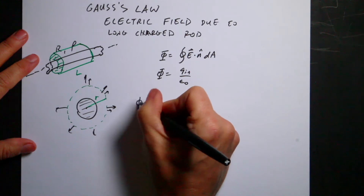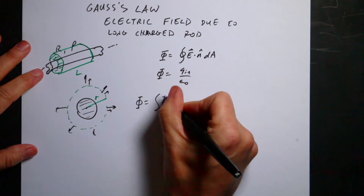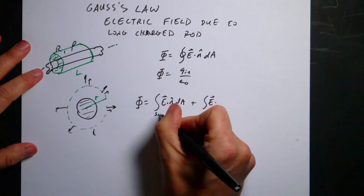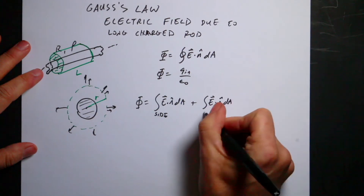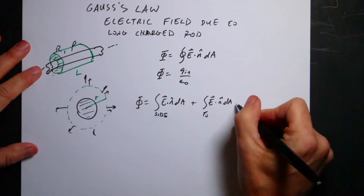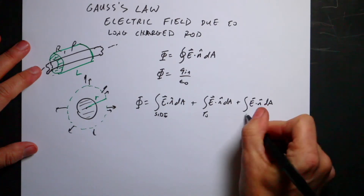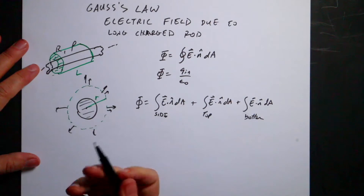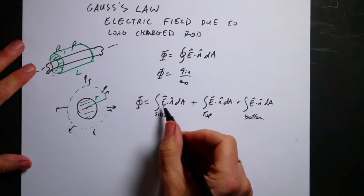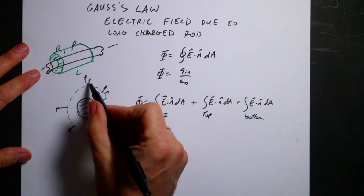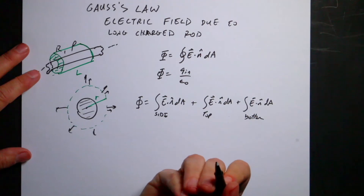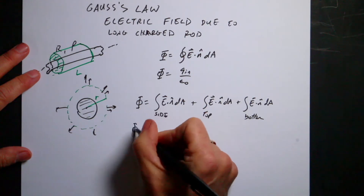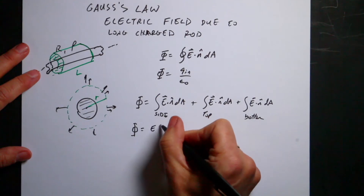So the flux is going to be equal to the integral of E dot N-hat dA on the side, plus the integral of E dot N-hat dA on the top, plus the integral of E dot N-hat dA on the bottom. I have to do all three sides. On the side, since E is in the same direction as N-hat, E dot N-hat is just E, and since E is constant I can bring it out.